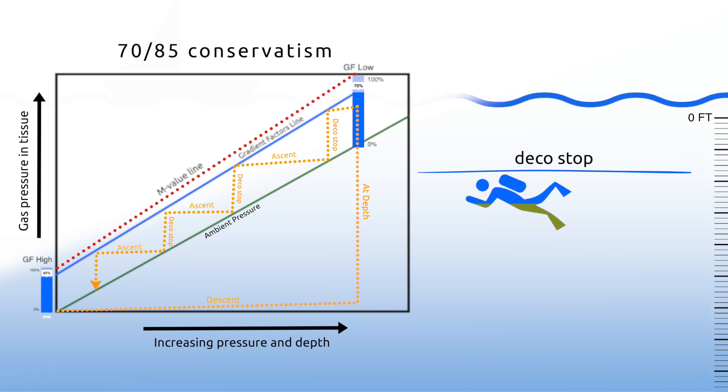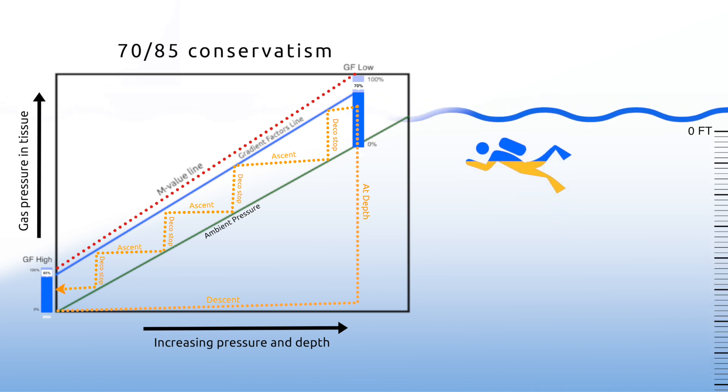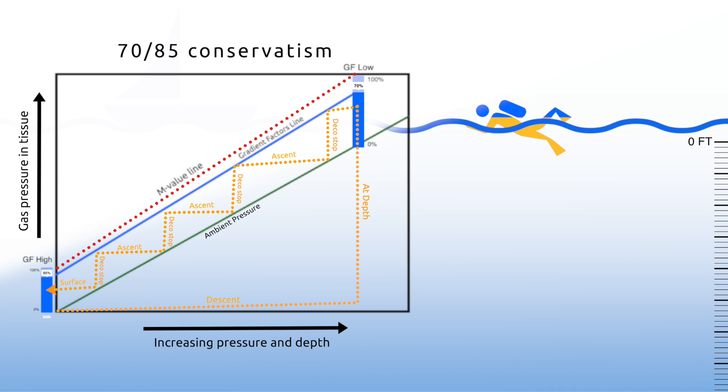The GF high is the fraction or percentage of the Buhlmann limit that you will allow when you surface. Hence, the higher the GF number, the shorter your decompression time will be. For example, a GF low of 30 will have a deeper first stop than a GF low of 70. Whereas, a GF high of 70 will have longer stop times than a GF high of 85.